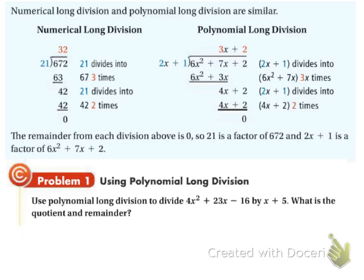You guys are used to doing long division. Well, you don't even do it anymore, you put it in your calculator. But way back when you were little ones, and your third grade teacher made you do long division — this is what they made you do. So this is 672 divided by 21. 21 goes into 67 three times, and so on and so forth. Notice here at the end, the remainder is zero. So 21 goes into 672 evenly — there is no remainder.